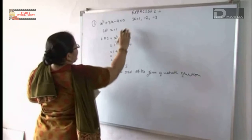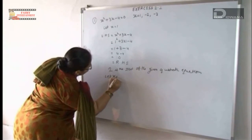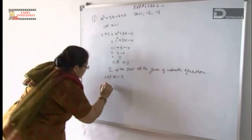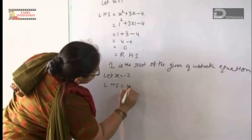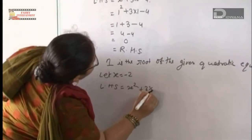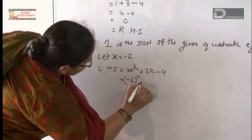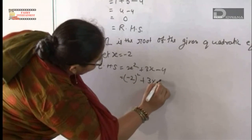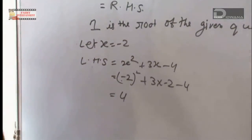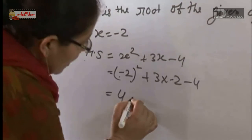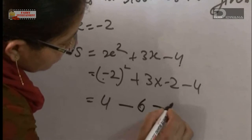Now we will take the value minus 2. Let x equal to minus 2. So left hand side equals x squared plus 3x minus 4. x value is minus 2: minus 2 squared plus 3 into minus 2 minus 4. Minus 2 squared is 4, and minus times minus will be plus, so 4 plus — then minus 6 minus 4.